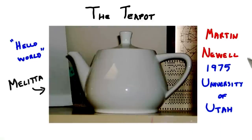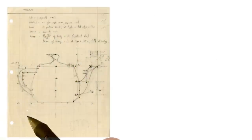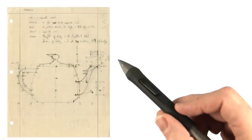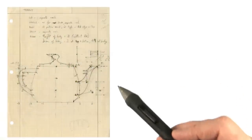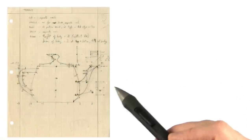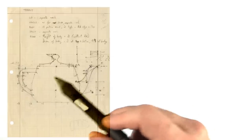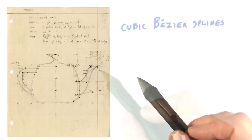In 1975, Martin Newell, at the University of Utah at the time, was talking about this problem with his wife, Sandra. They were just sitting down for tea, so she suggested that he model a tea set. He made a sketch of the silhouette on graph paper. The drawing represented a recognizable profile of a teapot, though it doesn't match the real world teapot — the spout and the knob on the lid are a bit different, for example.